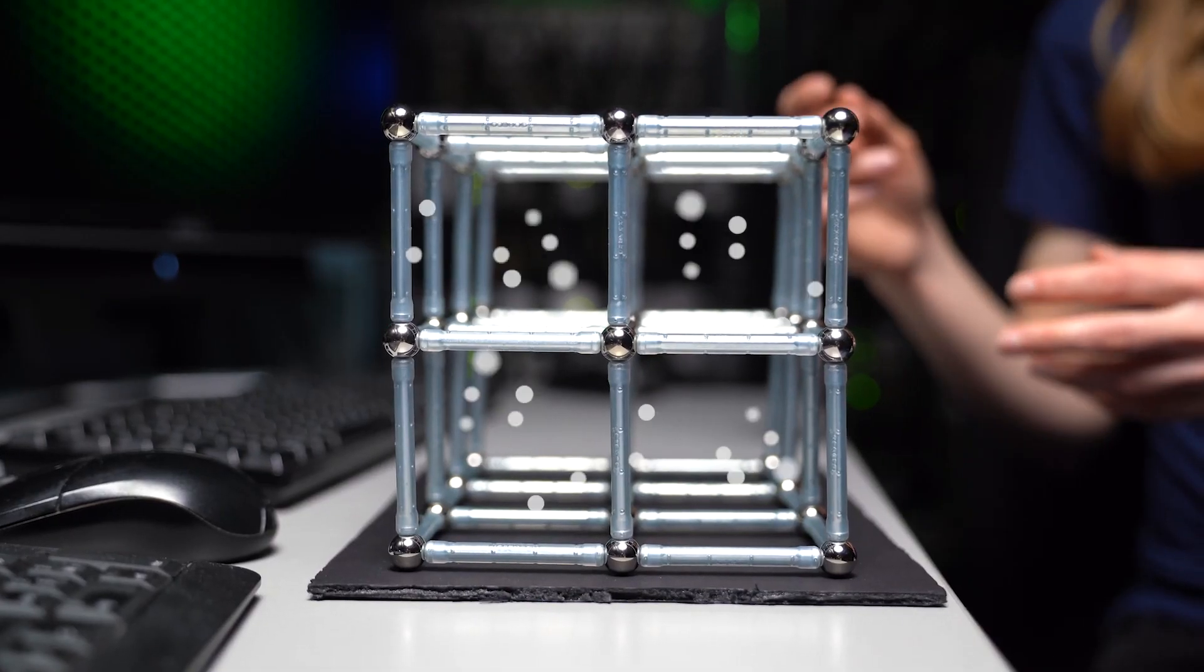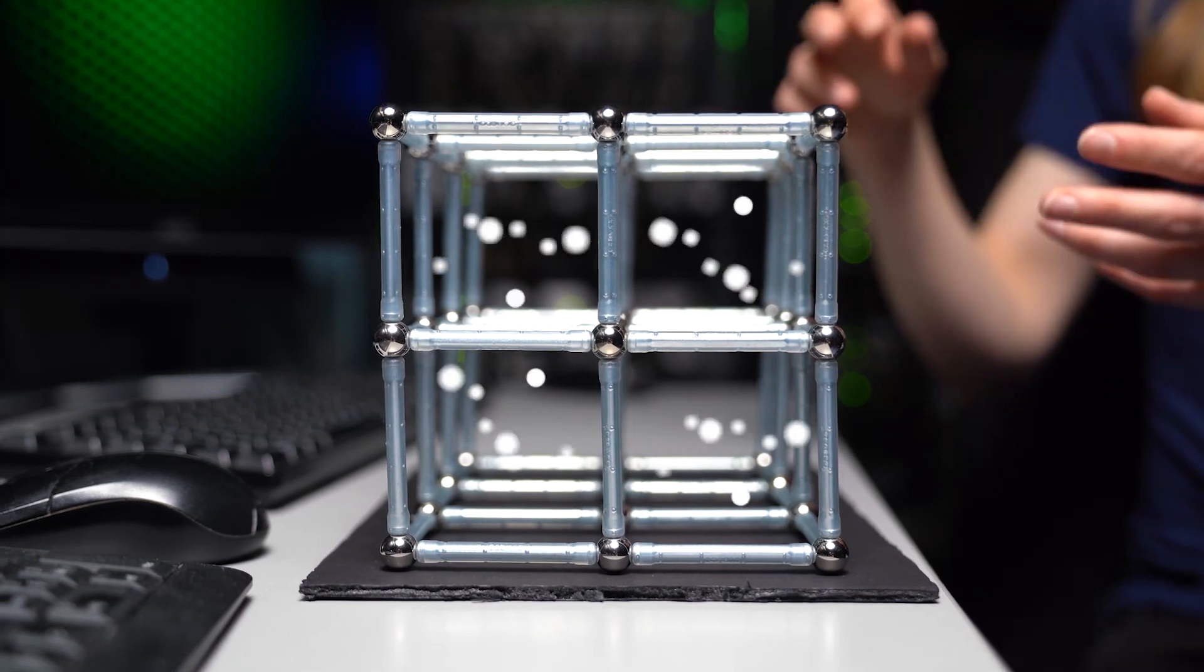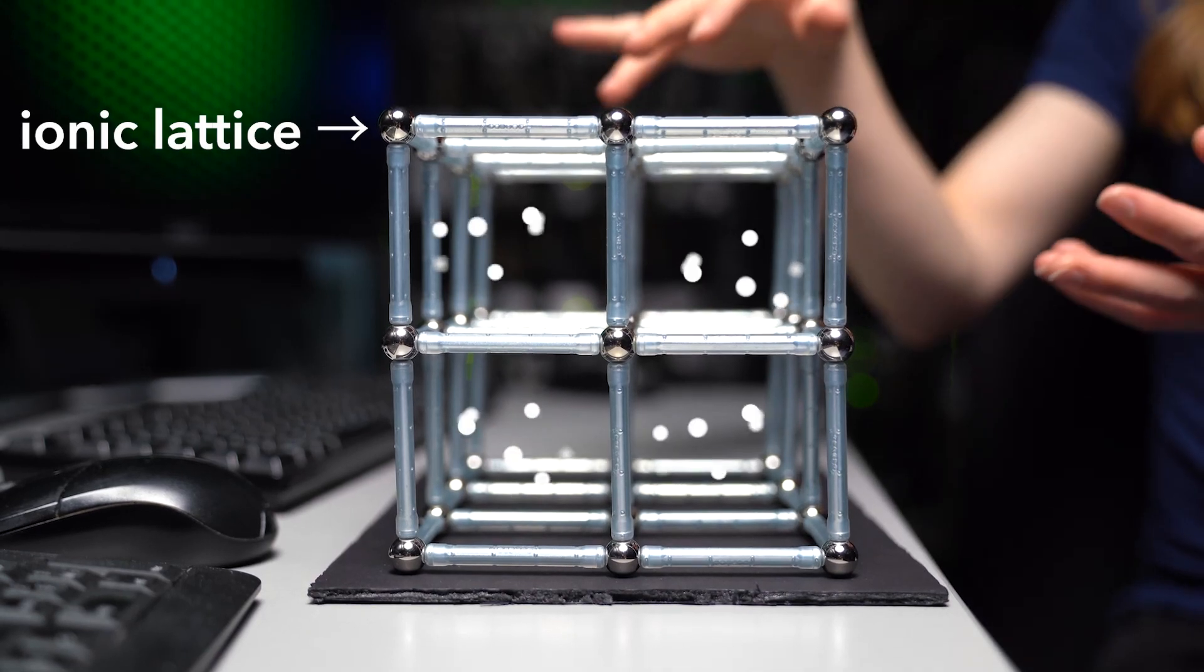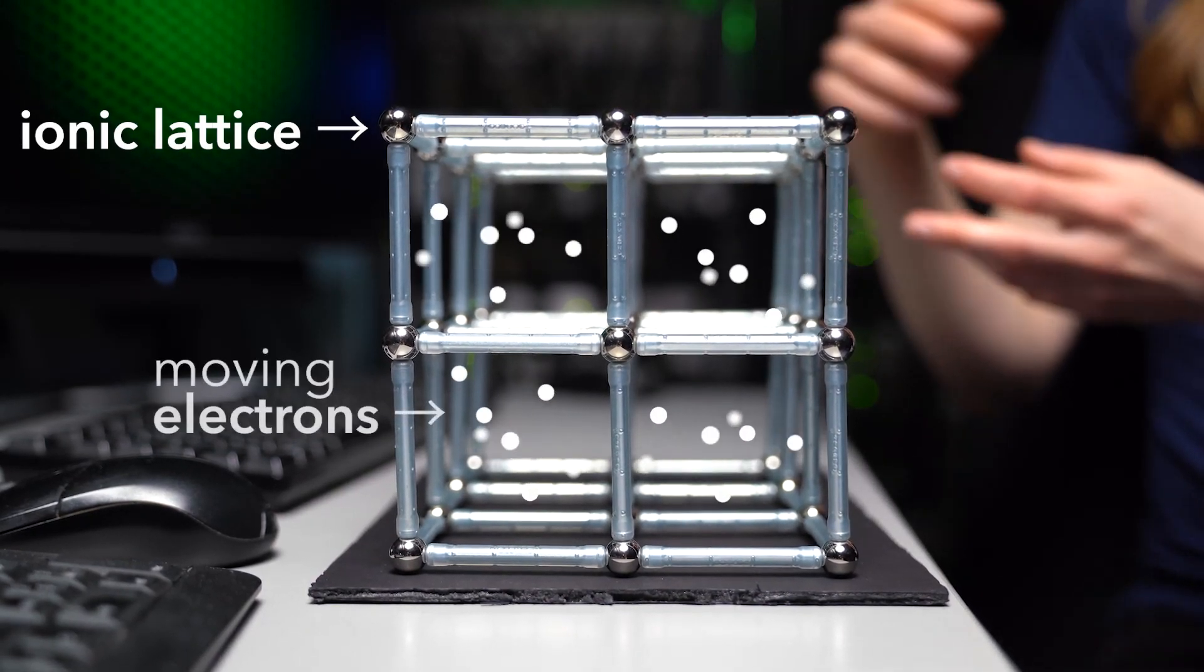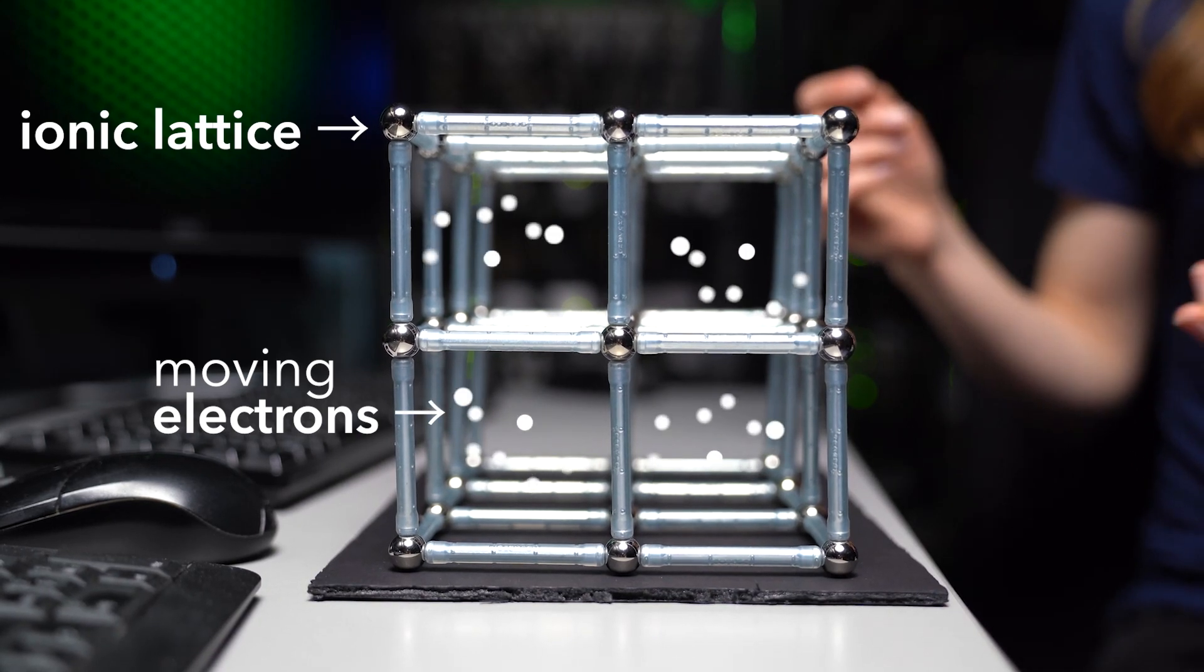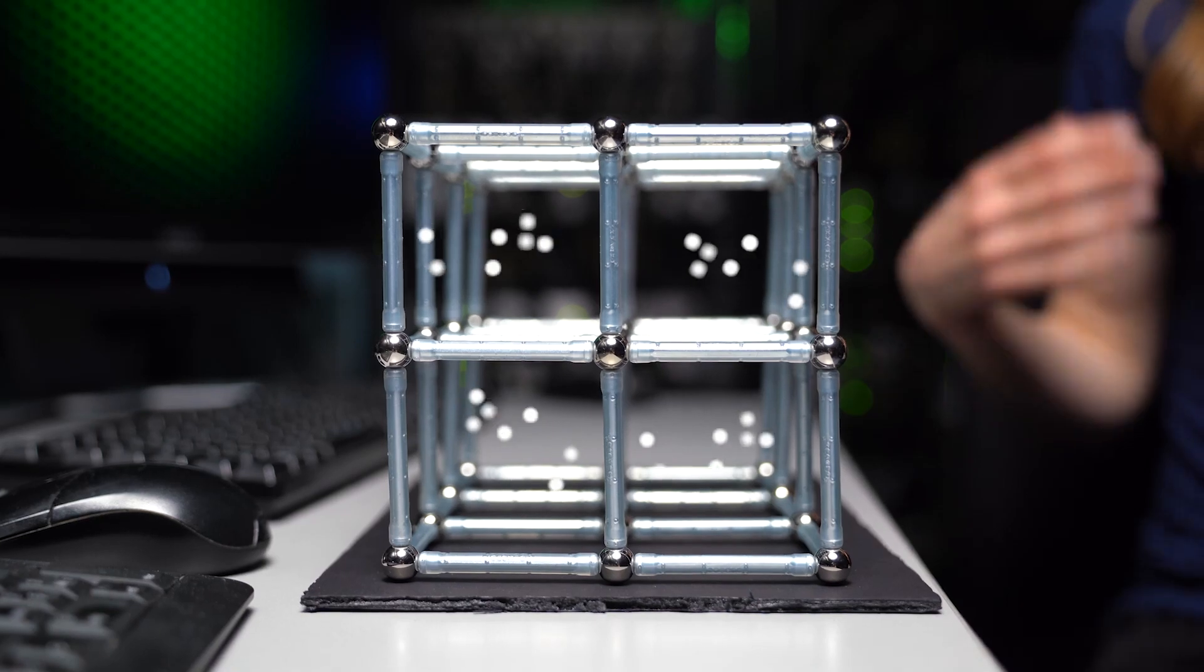And now some of the electrons which originally belong to each atom can move freely around in this crystal. So that means we have a lattice made of ions and the freely moving electrons. And it's exactly this interplay between the electrons and the lattice which determines the special properties of these materials.